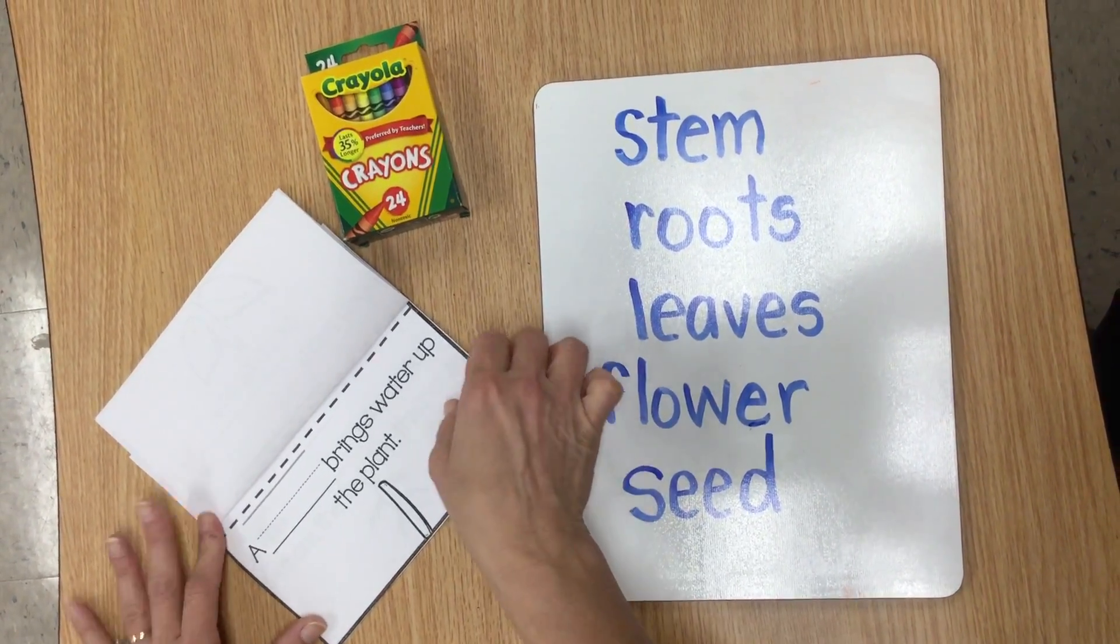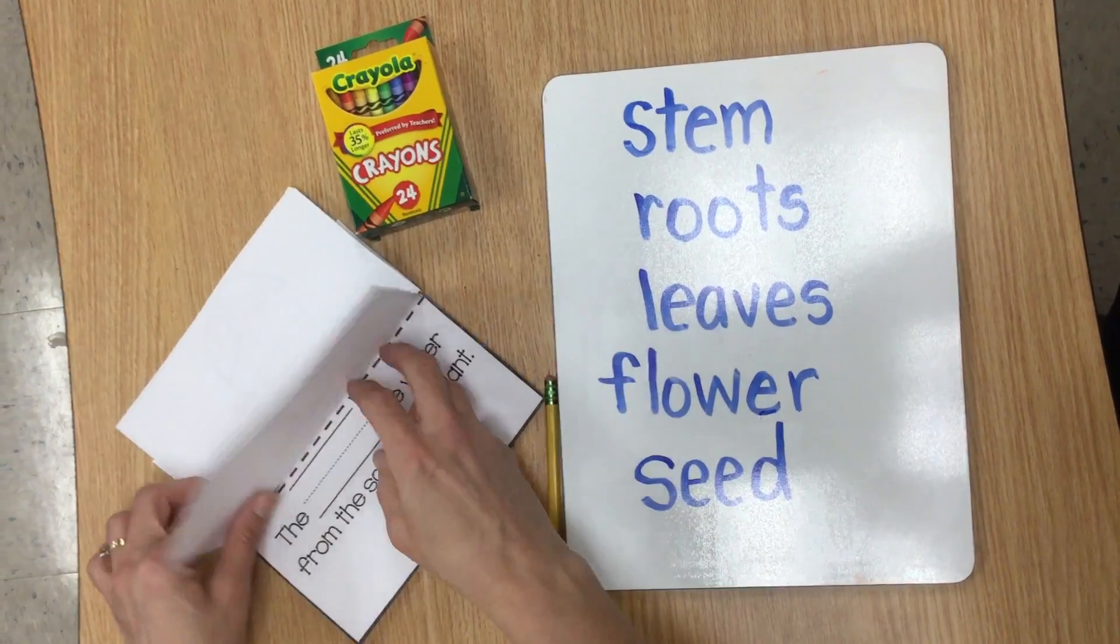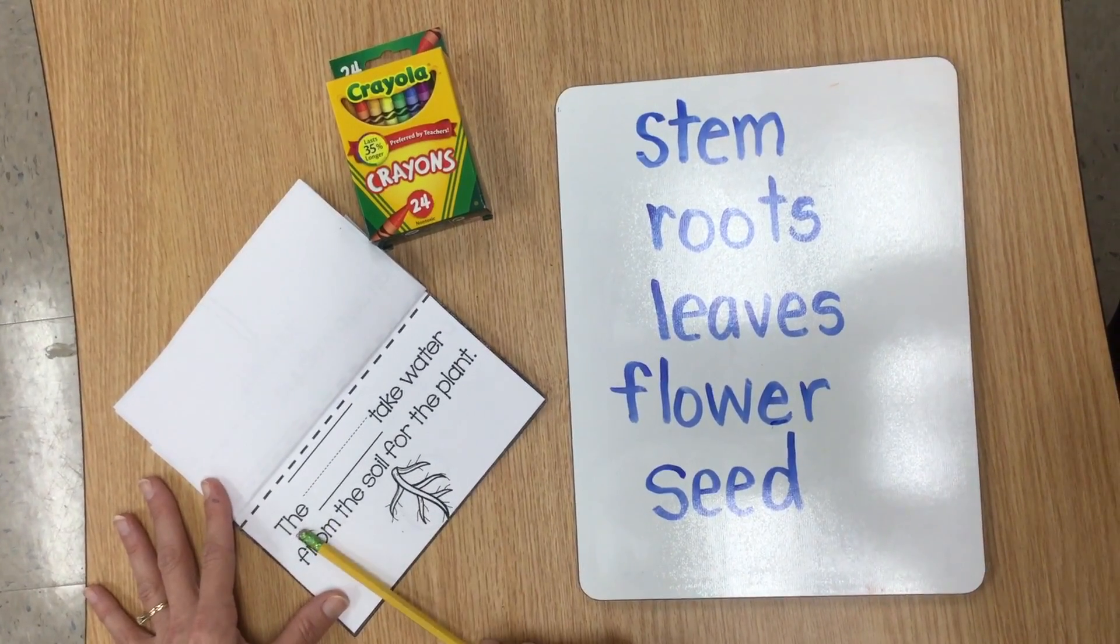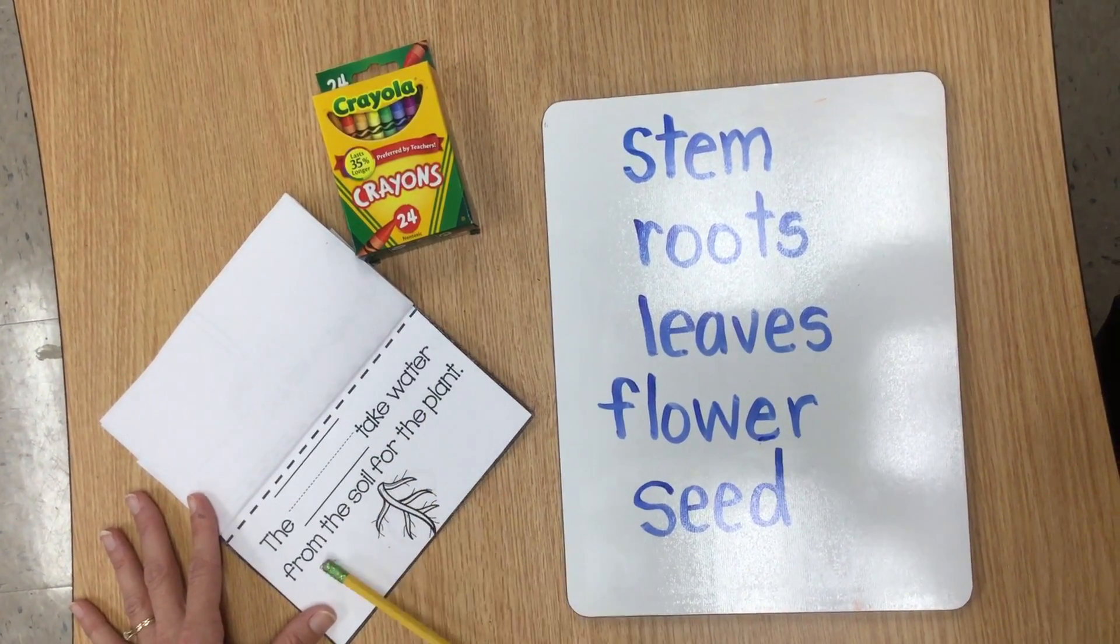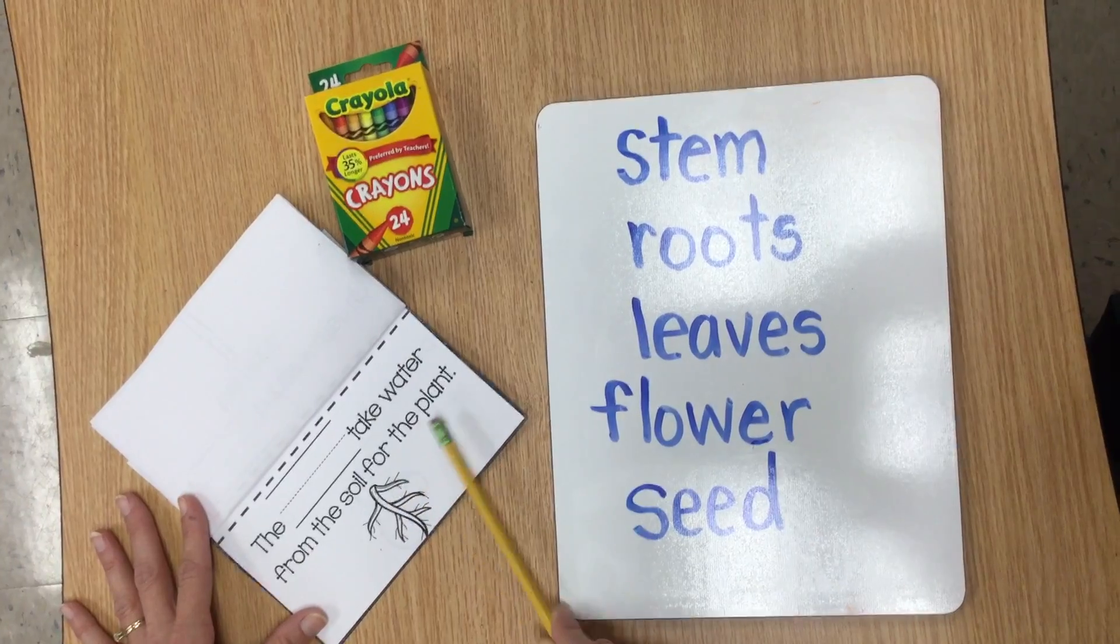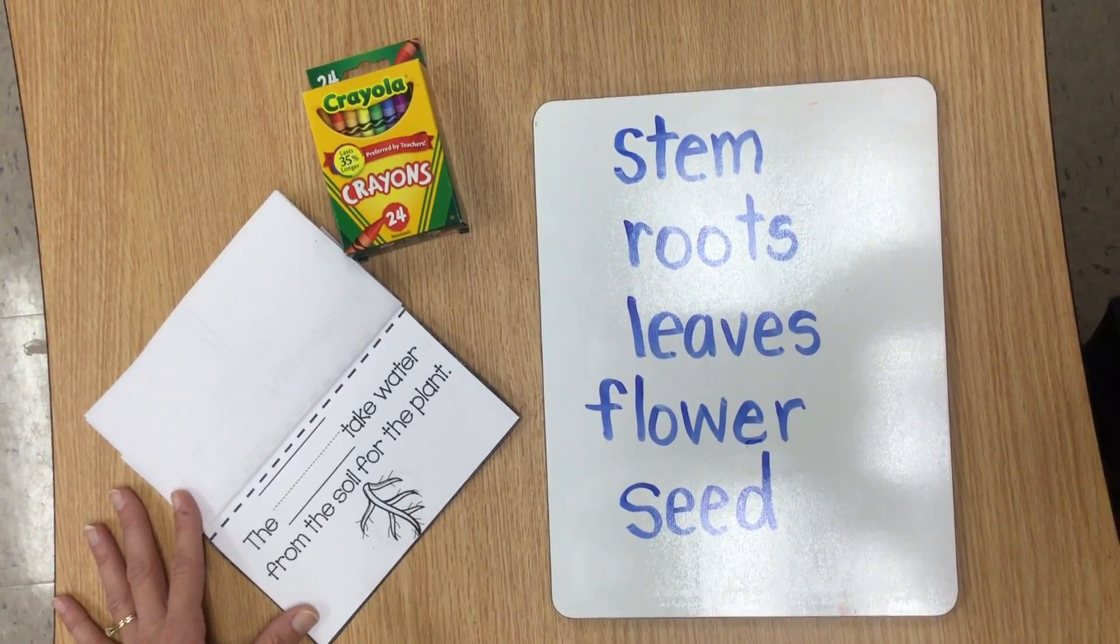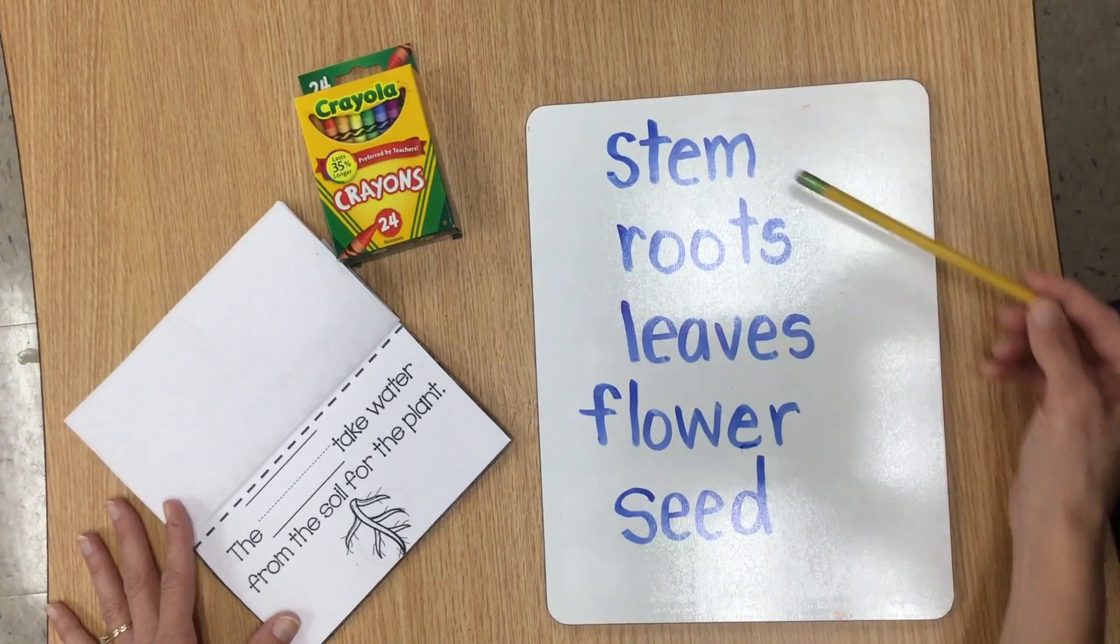Welcome back. You're moving right along. You're doing a really good job. I'm turning to the next page and on this page the sentence says the blank takes water from the soil for the plant. Hmm, looks like it has hairs on it almost. Let's look at our vocabulary words again.